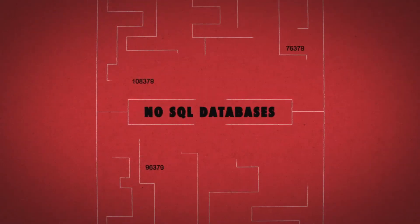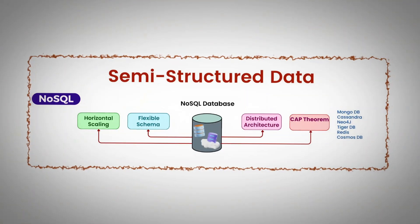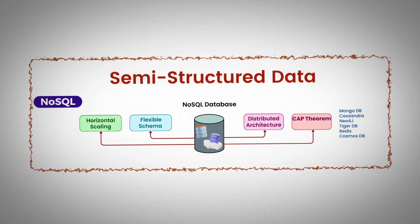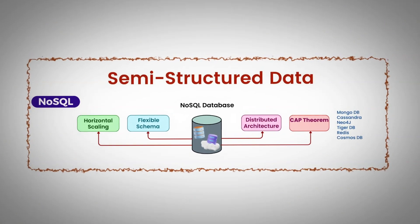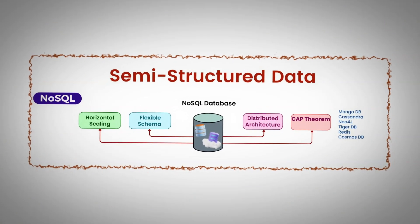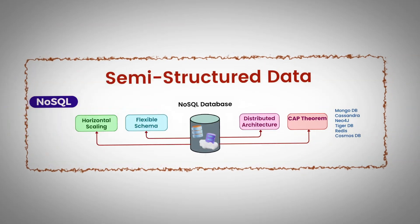NoSQL databases deal with semi-structured form of data, meaning some kind of structure is there but the schema is not rigid — it's flexible. Something like JSON, XML, or YAML. If we have to deal with such kind of data, then NoSQL databases come into picture. NoSQL databases follow the CAP theorem.